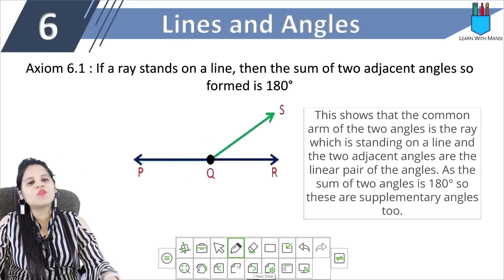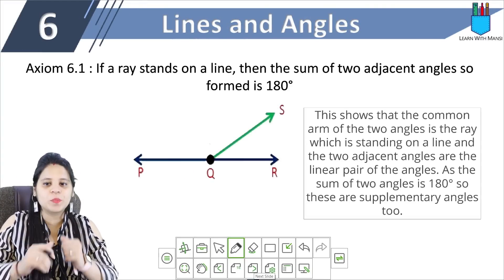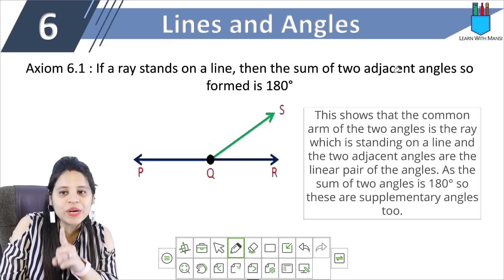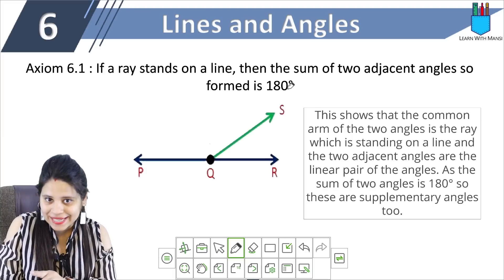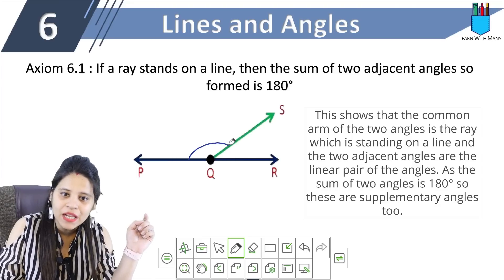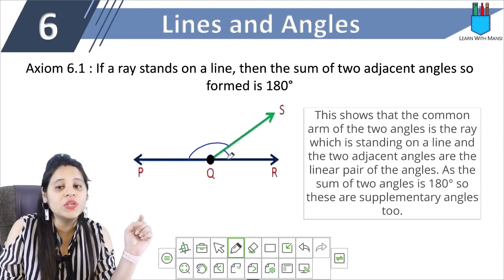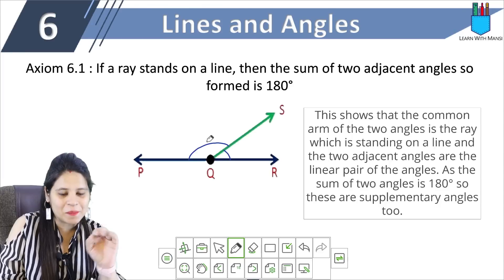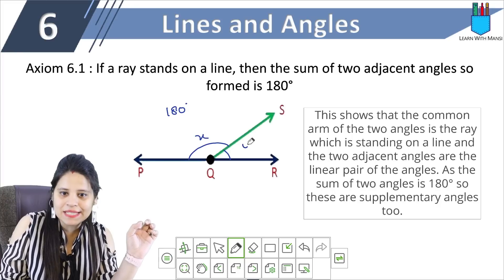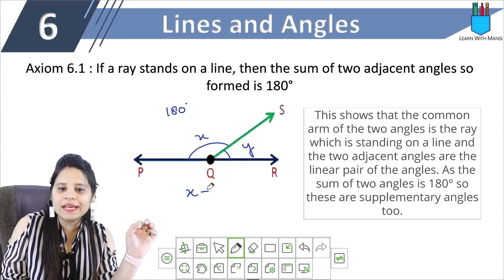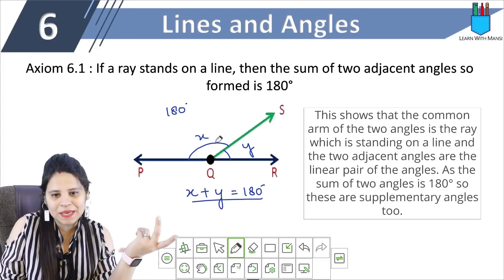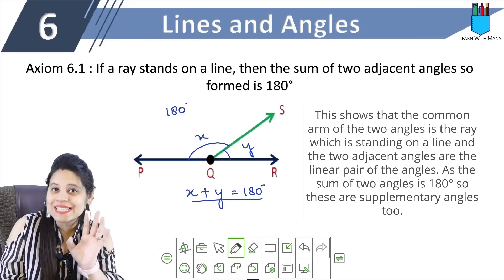The next topic we have is Axiom 6.1. Let's read it: if a ray stands on a line, then the sum of two adjacent angles so formed is 180 degrees. If a ray stands on a straight line, this angle and this angle are adjacent angles. We know that these angles are a linear pair, so they will always form a 180-degree angle. Like if this angle is x and this angle is y, then angle x plus y will always be equal to 180 degrees. You can say these are supplementary angles.